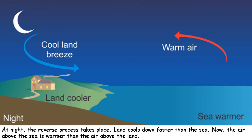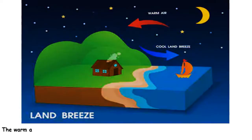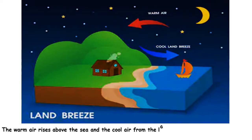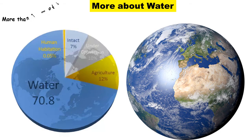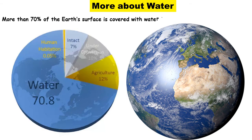At night, the reverse process takes place. Land cools down faster than the sea. Now the air above the sea is warmer than the air above the land. The warm air rises above the sea, and the cool air from the land rushes towards the sea. This is known as land breeze.